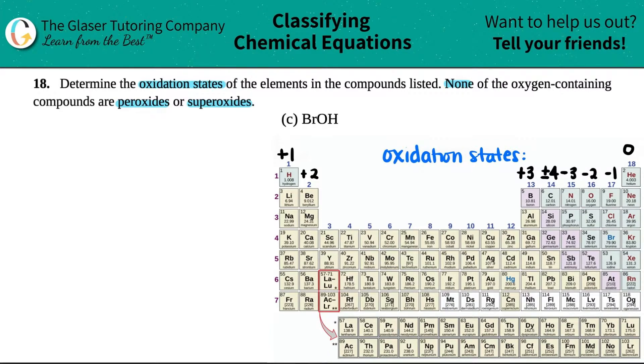Okay, so bromine hydroxide. So let's just write it over here. BrOH. We need to find the oxidation states or the charges - they mean exactly the same thing - of each individual element. So I need to find it out for bromine, oxygen, and hydrogen.